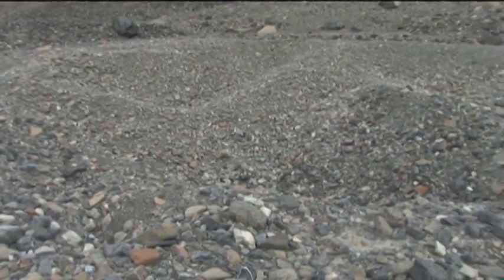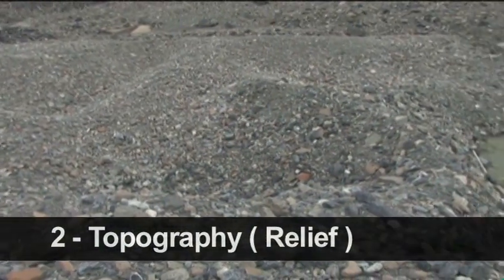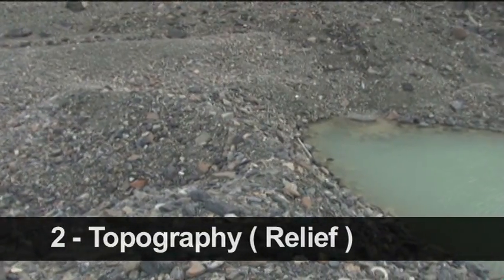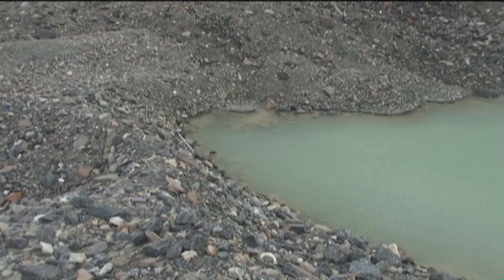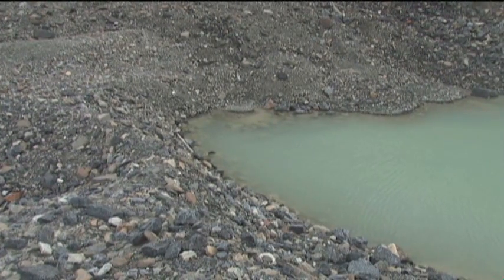Starting with parent materials, we then have our topography, or relief. Relief is really important because it controls the distribution of water on the landscape — certainly one of its key functions. Convex landscape positions, like the one we're standing on right here, will tend to shed water. Concave landscape positions will tend to collect water. The timing, amount, and persistence of water in the soil are big factors in controlling soil development.